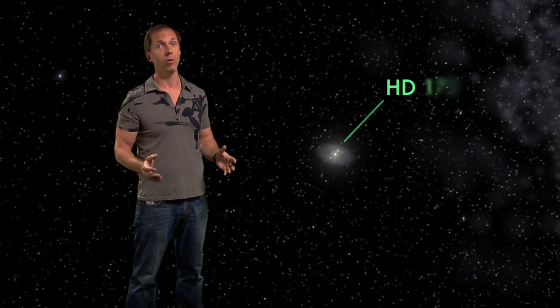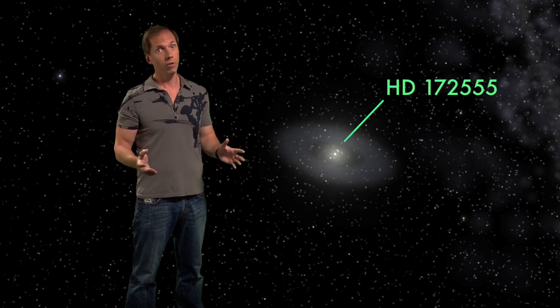Our dusty star of interest is a faint speck known as HD 172555. It's about 100 light-years away and 12 million years old, which, compared to our 4.5 billion-year-old Sun, is like a baby born a few days ago.